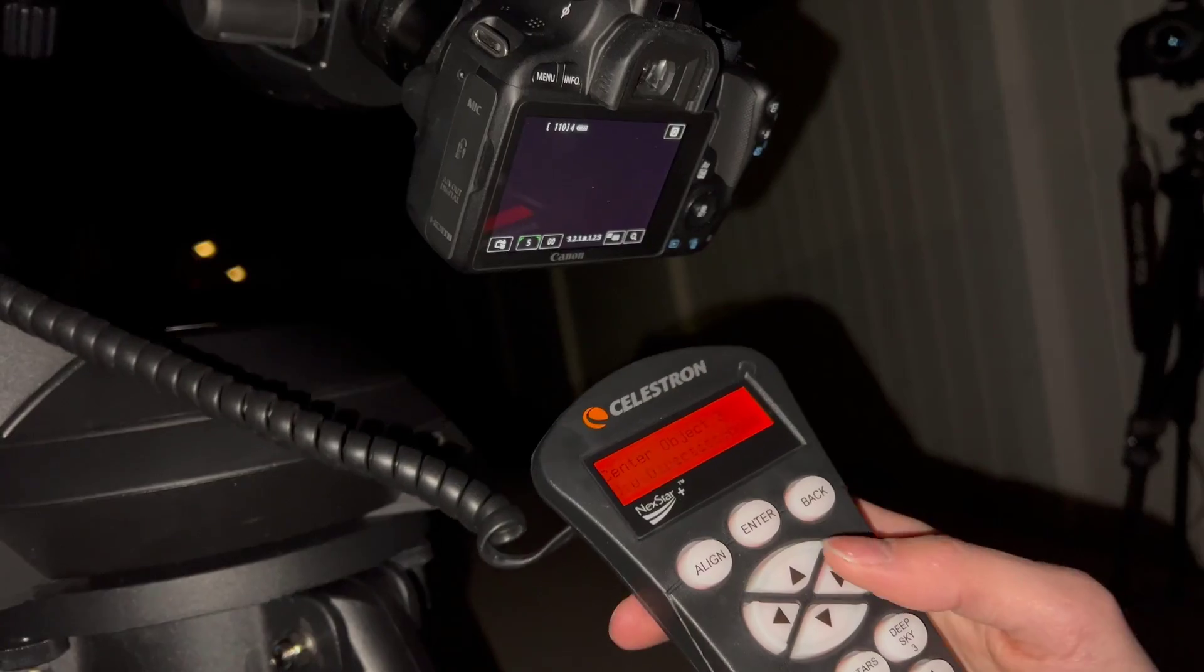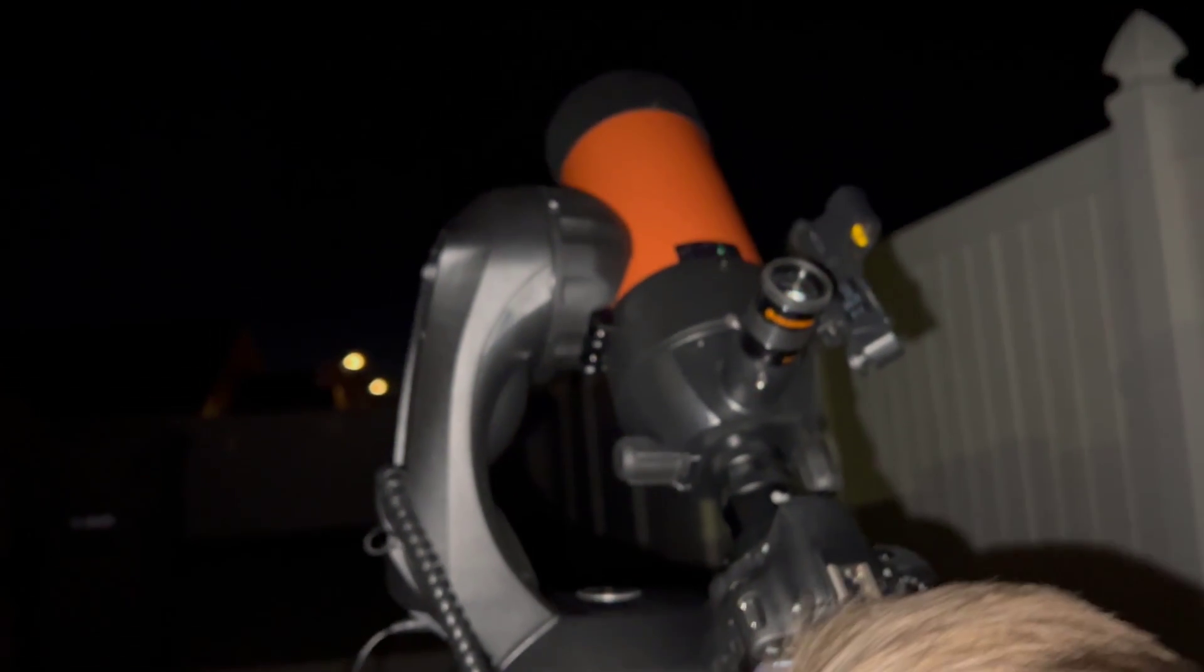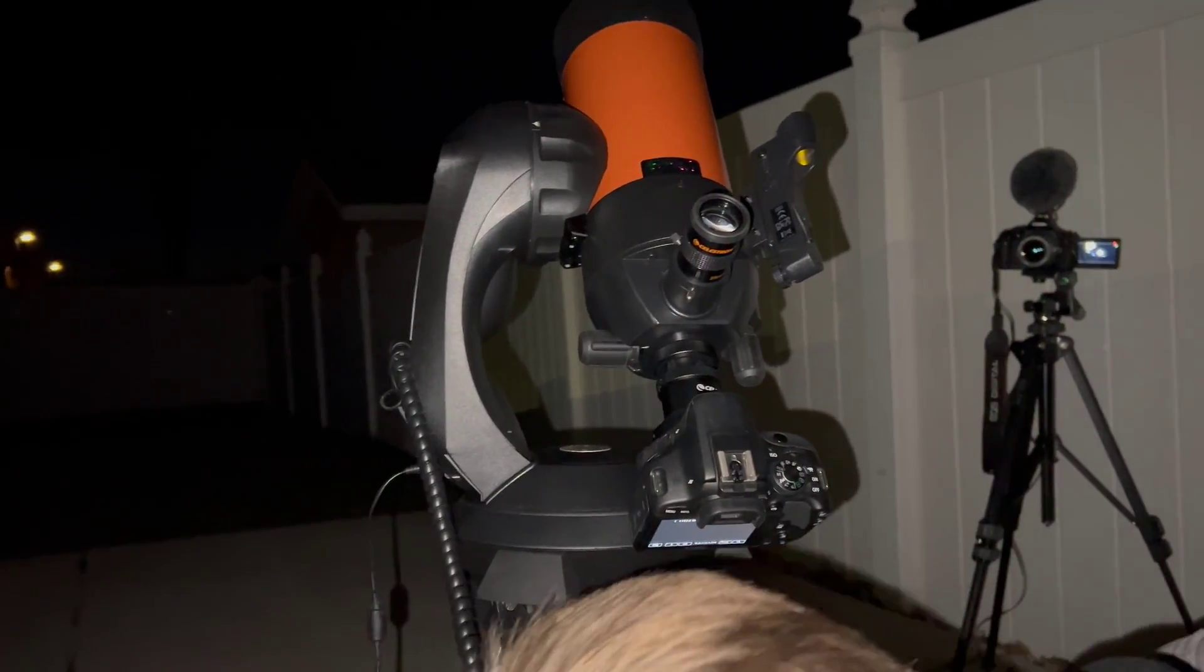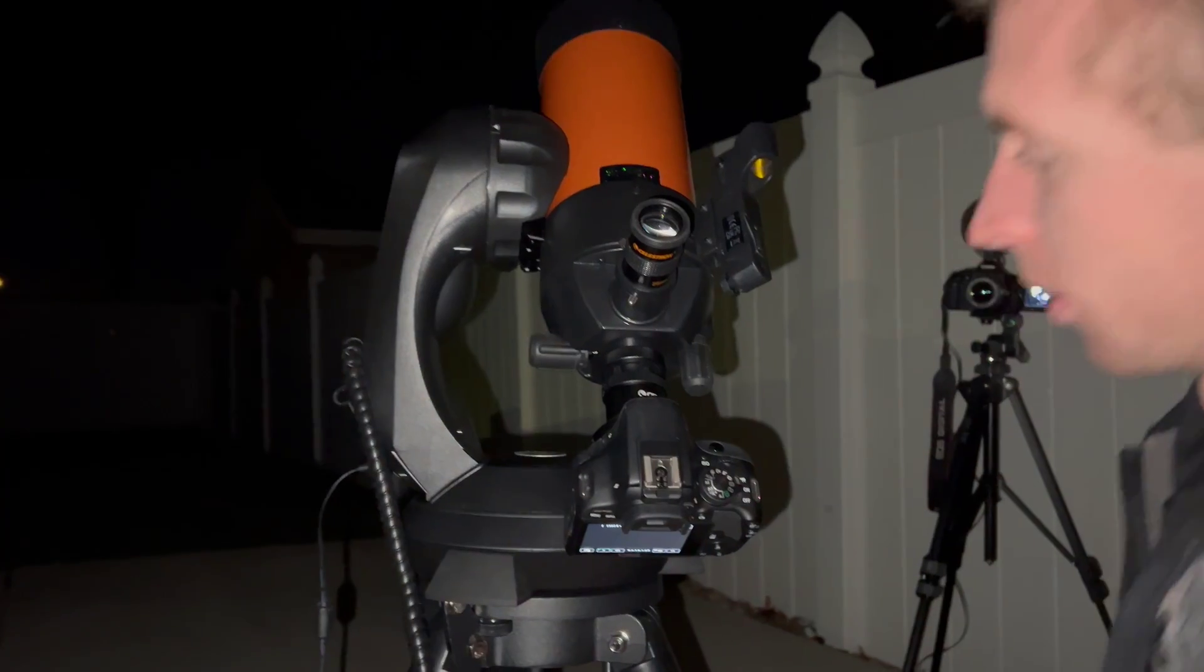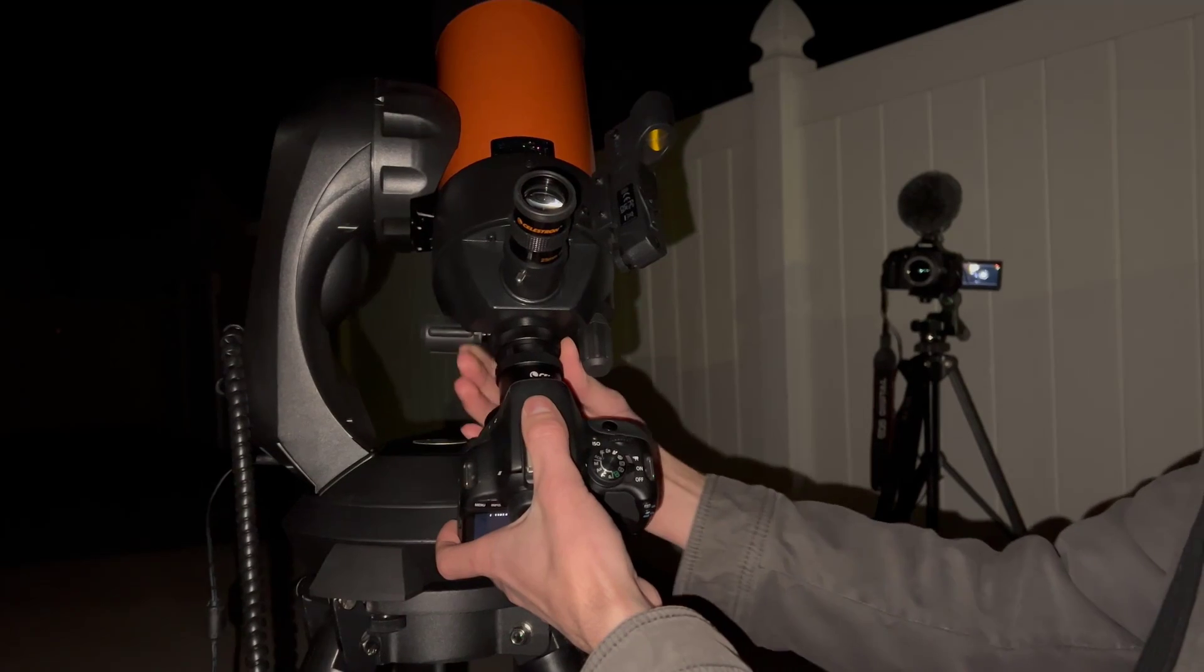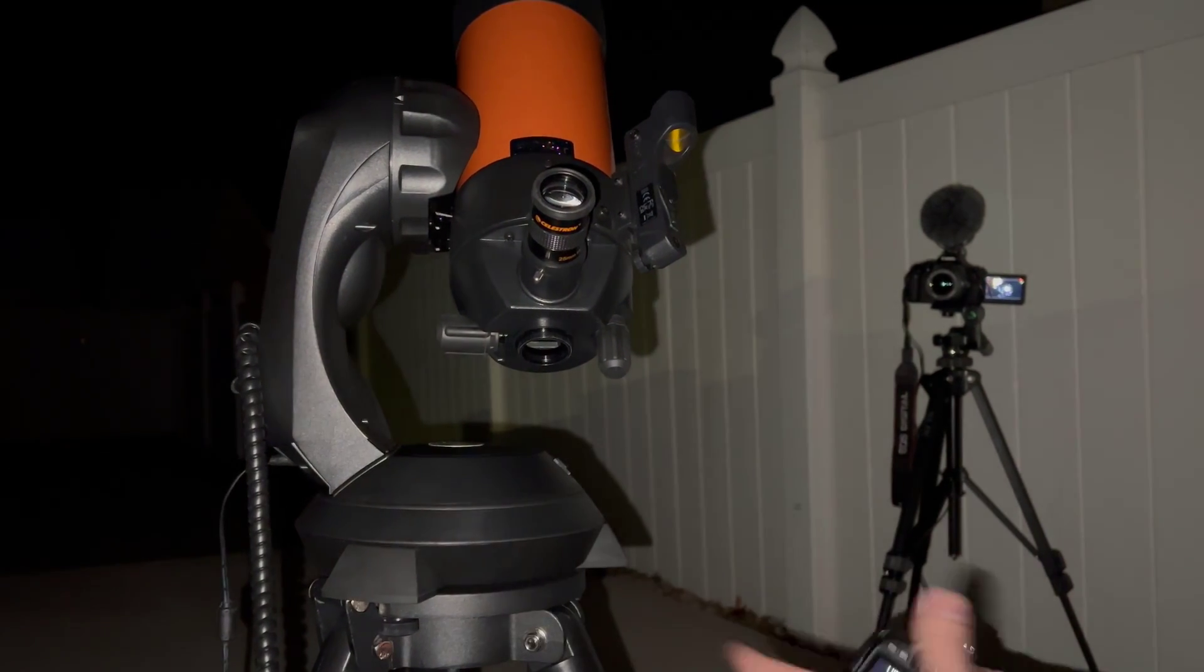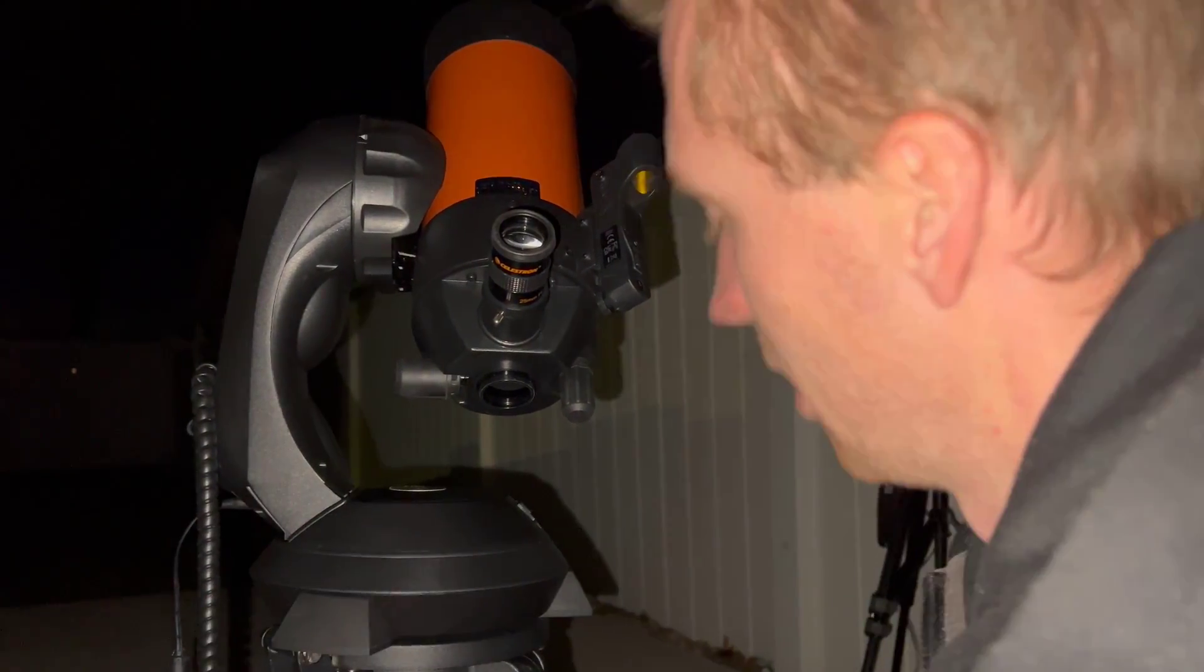And then one more object, object three. And scroll up here. And actually, if I go too high, I'm going to run my camera into my mount. So watch this. I'll just take my camera off real quick. And this is where the flip mirror comes in a lot of handy. You just flip it over to the eyepiece. And keep going.